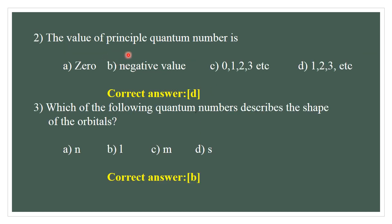Question number 2. The value of the principal quantum number is 1, 2, 3, etc. The correct answer is D.